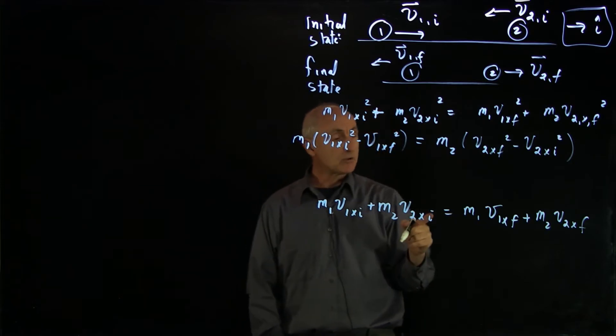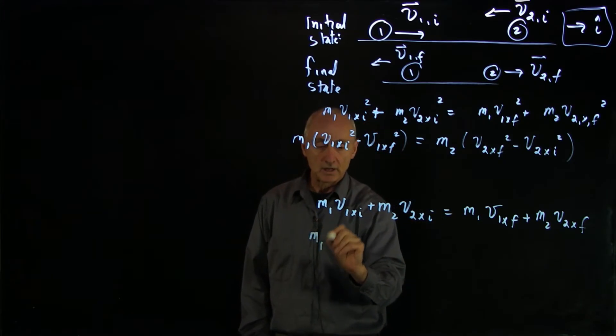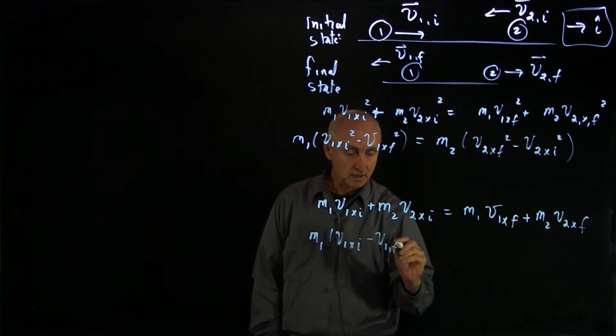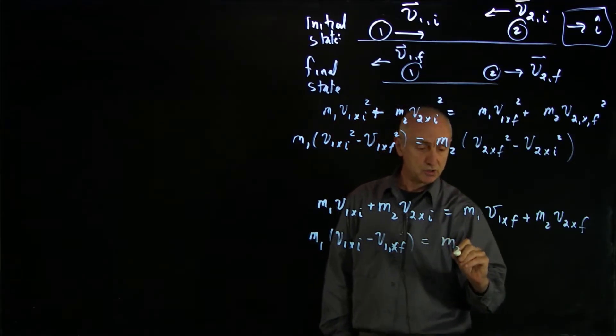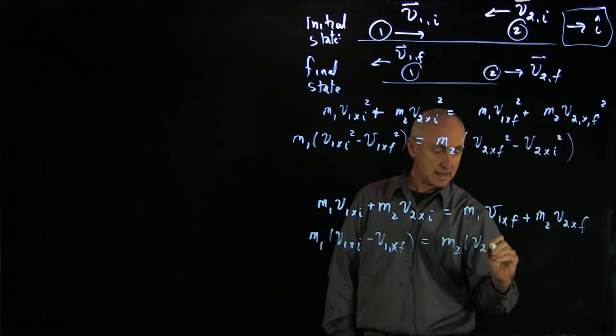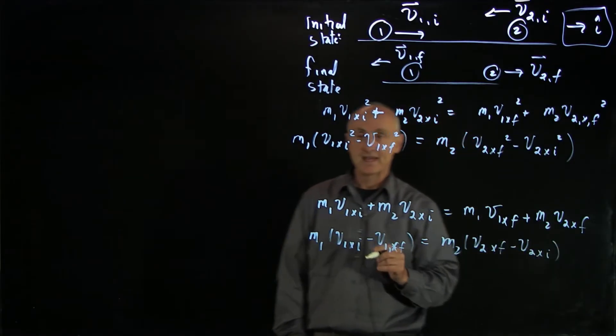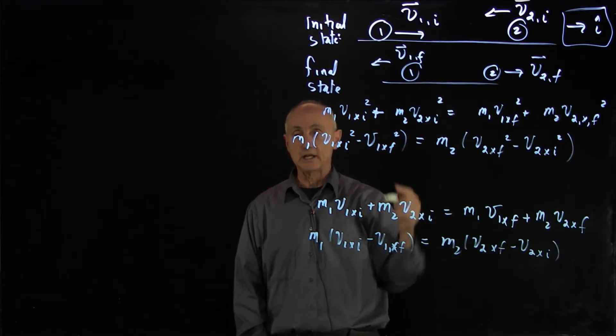Now, likewise, I'll do the same thing down here. So here I have m1 v1x initial minus v1x final, and that's equal to m2 v2x final minus v2x initial. Now here comes the algebraic trick in which I'm going to linearize these systems.